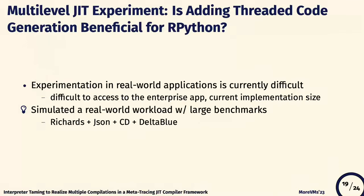Next, we show the simulated real-world workflow experiment. The objective is to evaluate the benefits of adding threaded code generation to RPython for multi-level compilation. We wanted to evaluate using real-world applications, but it is currently difficult because we cannot access enterprise applications. Also, our PySON implementation has about 200 instructions missing compared to a full virtual machine. So we decided to simulate real-world workloads by combining workflow benchmark programs. The targets are Richards, JSON, collision detector, and DeltaBlue.